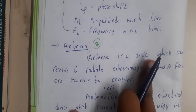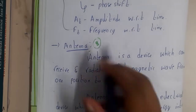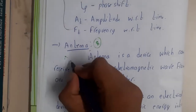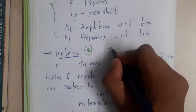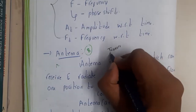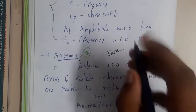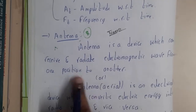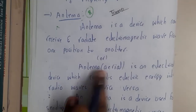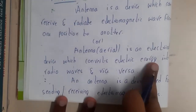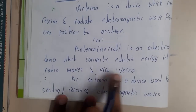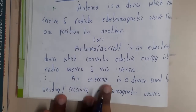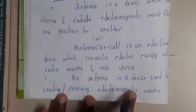So we'll be using antennas for transmitting data. An antenna is a device which can receive and radiate — basically it can be used for receiving as well as sending. The word we use is 'transceiver' — it can transmit as well as receive. An antenna is a device which receives and radiates electromagnetic waves, and it converts electrical energy into radio waves and vice versa.